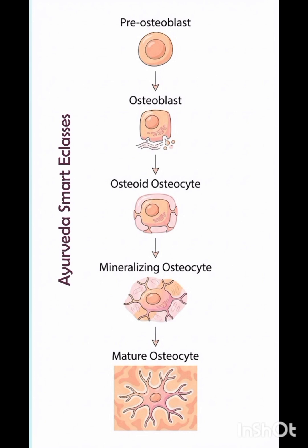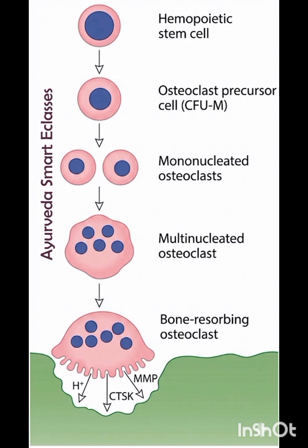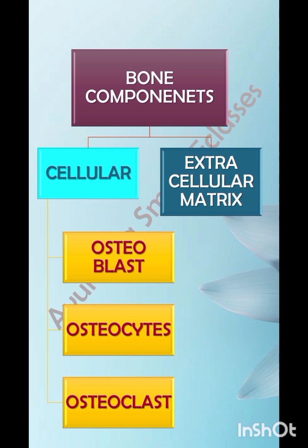Osteoclasts are derived from monocytes and resorb bone by releasing hydrogen ions and lysosomal enzymes. They are large, multinucleated cells. The image shows the formation of osteoclasts: starting as a hematopoietic stem cell, progressing to an osteoclast precursor cell, then a mononucleated form, and finally a multinucleated bone-resorbing osteoclast.